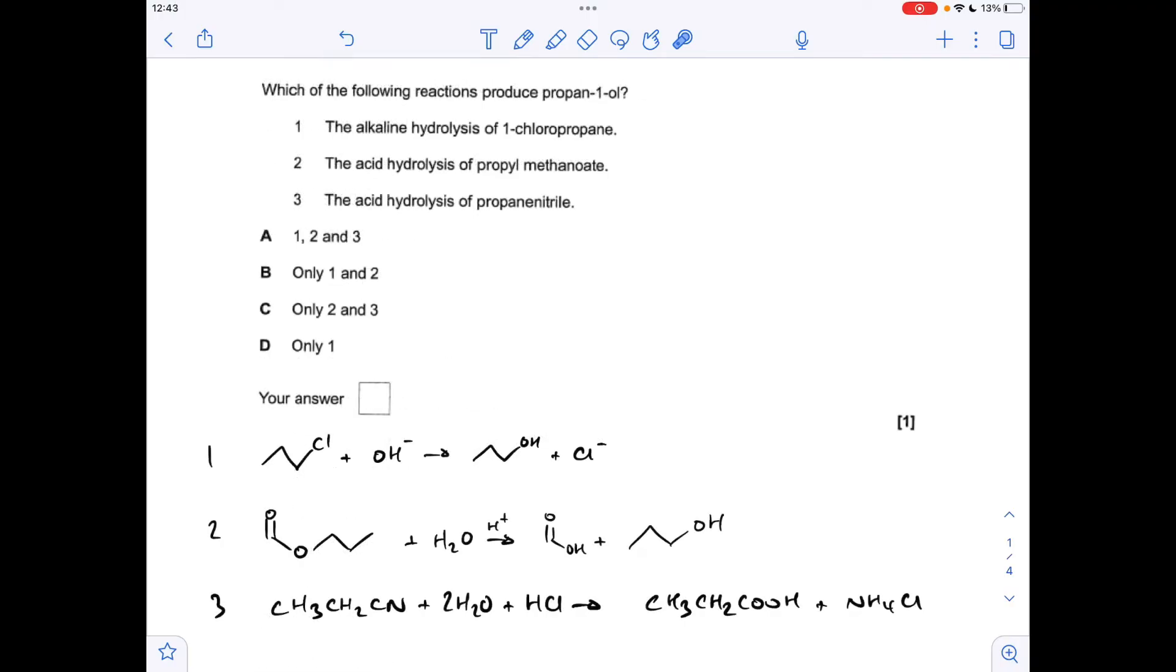Moving on to the next question, again testing our knowledge of the organic reactions. Which of the following reactions produces propane 1-ol? The alkaline hydrolysis of 1-chloropropane. Well there's the equation and you can see it has produced propane 1-ol.